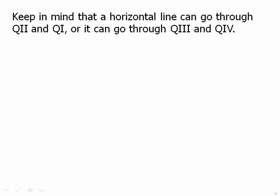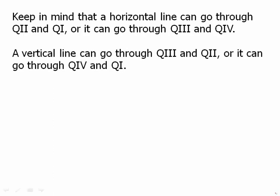Keep in mind that a horizontal line can go through the first and second quadrants. That is, if it's above the x-axis, or it can go through the third and fourth quadrants if it's below the x-axis. A vertical line can go through quadrants 2 and 3 if it's to the left of the y-axis, or it can go through quadrants 4 and 1 if it's to the right of the y-axis.